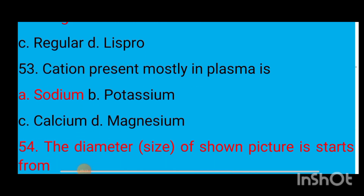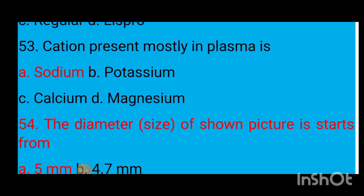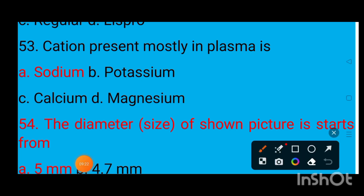Question number 53: The cation present mostly in plasma is option A sodium, option B potassium, option C calcium, option D magnesium. The correct answer is sodium — the cation present mostly in plasma is sodium.